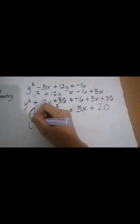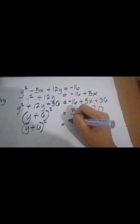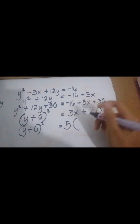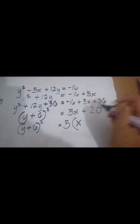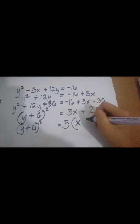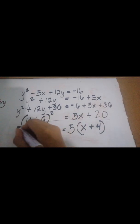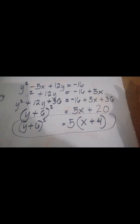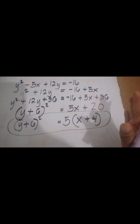To do this, we simply factor the right-hand side. We have y plus 6 squared is equal to 5 times the quantity of x plus 4. We get this by factoring out 5 from 5x plus 20: 5x divided by 5 is x, and 20 divided by 5 is 4. And here we have our standard form of the parabola. Later on, we will determine where the parabola opens and find its properties.